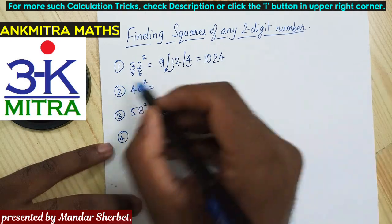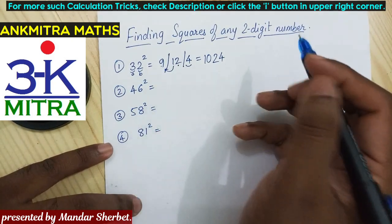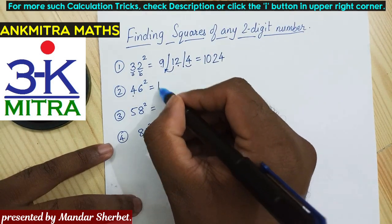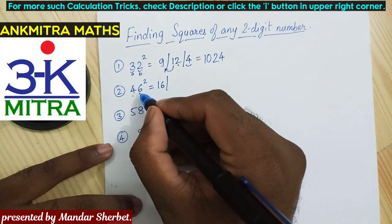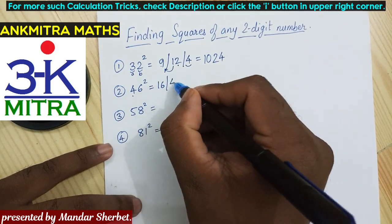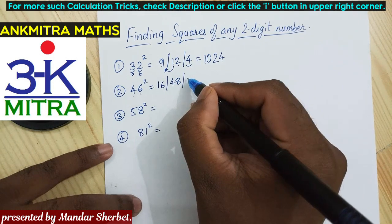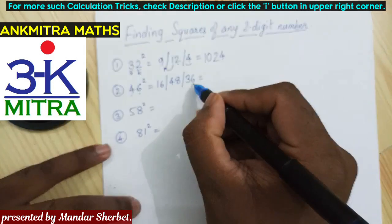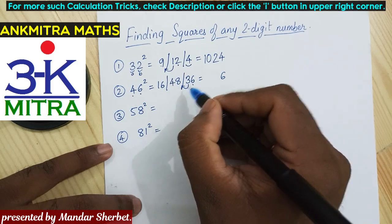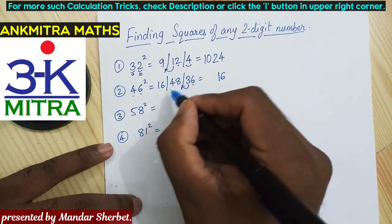The second example is 46. The procedure is very similar. Start with the square of 4: 4 multiplied by 4 is 16, so write down 16. Then multiply a by b: 4 multiplied by 6 is 24 — double of 24 is 48, so write down 48. For the final section, square of 6 is 36, so write down 36. For the final answer, the units digit 6 goes to the units place. The 3 is carried to the next section: 48 plus 3 is 51, so 1 is written in the answer and 5 is carried.